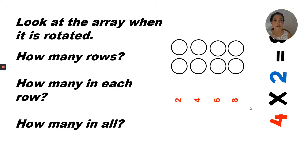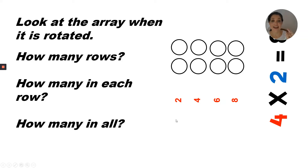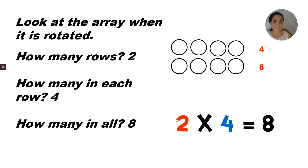Now here I've just rotated the array. Two rows of four equals eight — I see one, two, three, four in each row. To find out how many in all, I can count by fours two times. Four, eight. Two times four equals eight. Two rows of four equals eight.